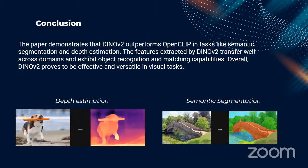To conclude, the paper demonstrates that DINOv2 outperforms OpenCLIP in tasks like semantic segmentation, where we can measure the distance between a pixel and its depth in the image, and depth estimation. The features extracted by DINOv2 transfer well across domains and exhibit object recognition and matching capabilities. Overall, DINOv2 proves to be effective and versatile across visual tasks.